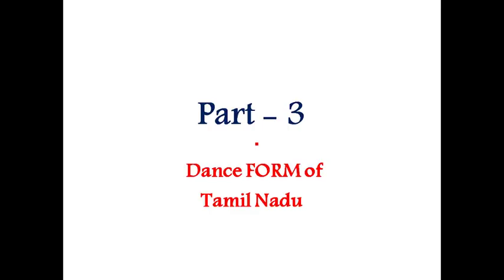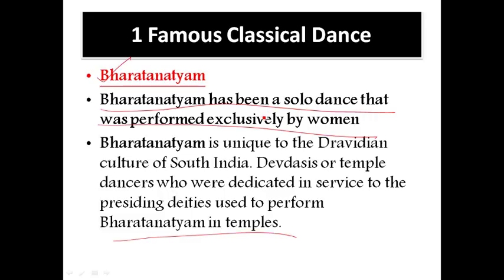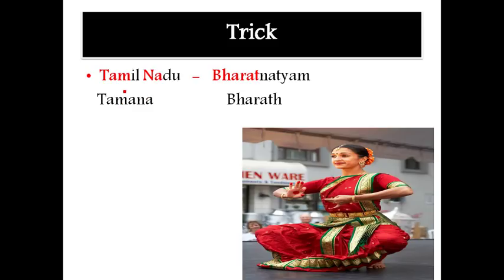Part 3: Dance form of Tamil Nadu. The dance form of Tamil Nadu is Bharatanatyam. Bharatanatyam is a solo dance, unique to the Dravidian culture of South India, performed by Devadasi or temple dancers. The trick: Tamil Nadu letters T-A-M-N-A sound like 'Tamanna', a famous actress. So remember: Tamanna performing Bharatanatyam. Tamanna = Tamil Nadu.